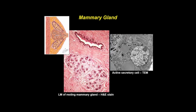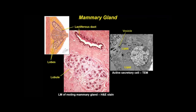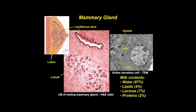Each mammary gland has 12 to 20 irregular lobes, which radiate from the nipple and drain into it by separate lactiferous ducts. Each lobe is a separate compound tubulo-alveolar gland, consisting of several smaller lobules whose size, shape, and histologic structure change with age and functional status of the reproductive system. Active secretory cells are characterized by lipid and dense vesicles in their cytoplasm. Milk consists of water, lipids, lactose, and proteins, which are mainly casein, lactalbumin, and secretory IgA.